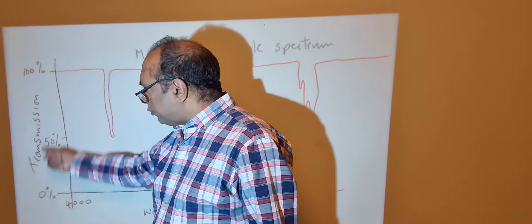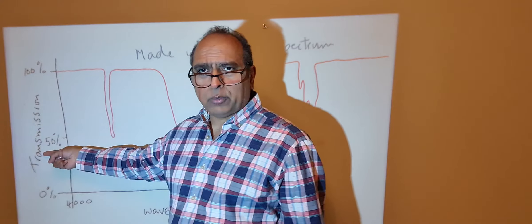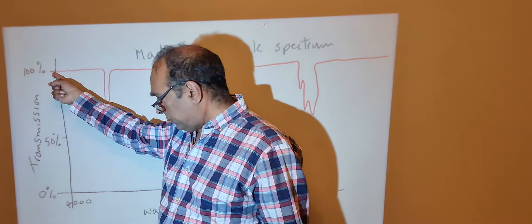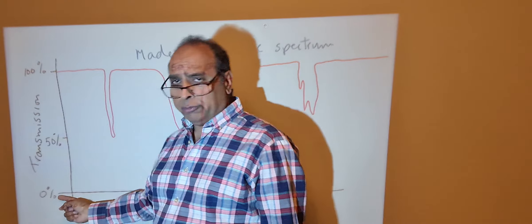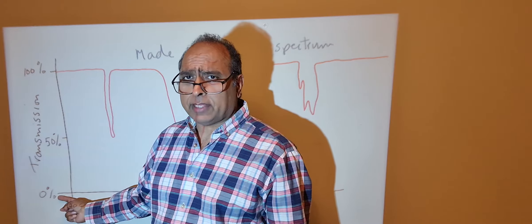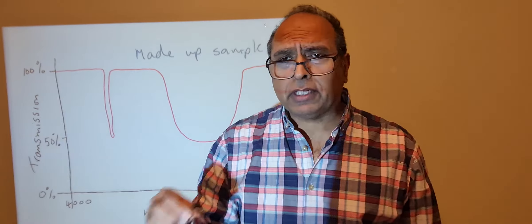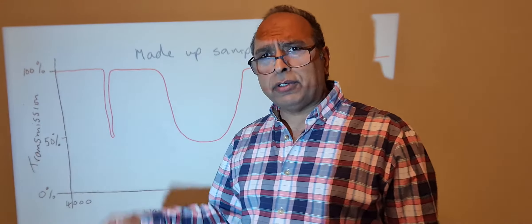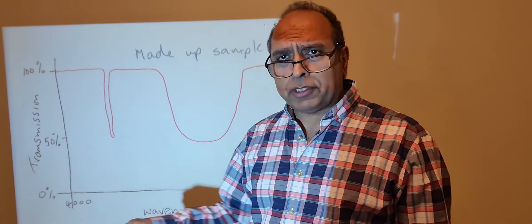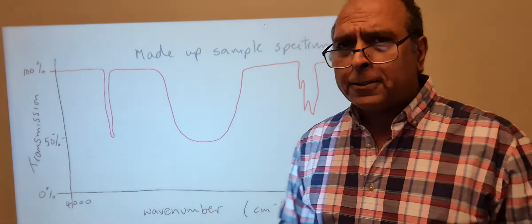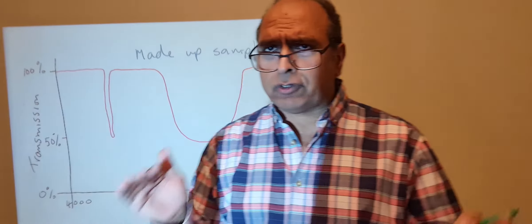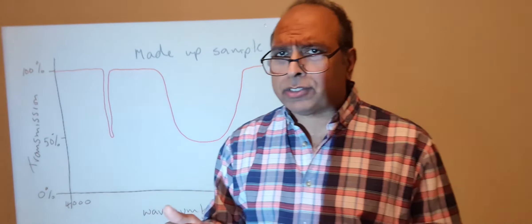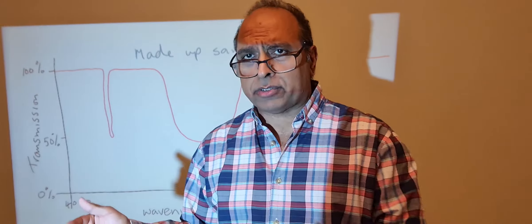If the y-axis is labeled absorbance, 0% is at the top and 100% is at the bottom. If labeled transmission, keep the percentages as normal. The relationship between the two is: transmission = 100 minus absorbance.